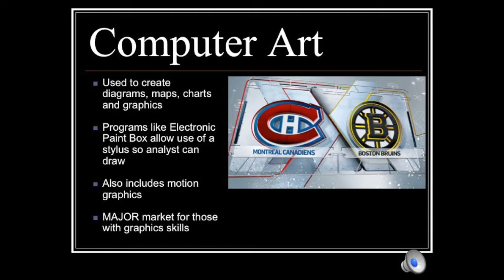Computer art, as the name suggests, is graphics generated on the computer, and it may include diagrams, maps, charts, and graphs. They can be created using what's called an electronic paintbox — an expensive computer graphics system made by Quantel where a whole section of maps is stored, and you can use a stylus to indicate arrows for a path. They can also be used with videotape in a story. This is what you see when analysts bring up video from a football game, freeze it, and draw on it to indicate where the coverage was weak and why a touchdown pass was completed. Computer art also comes in the form of motion graphics, such as you might make in After Effects. There is a major market in sports for people with graphic skills.